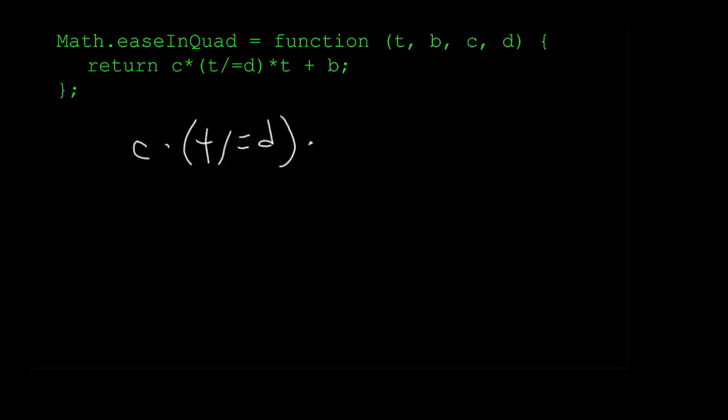Remember that t is the current time of the tween, and d is the total duration. And t will start at 0 and increase up to but not past d. So in the parentheses there, the first thing he's doing is dividing t by d. This converts t into a normalized value from 0 to 1.